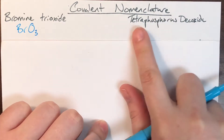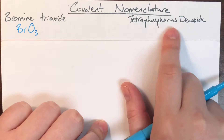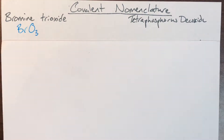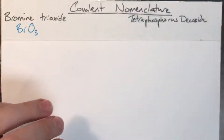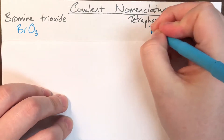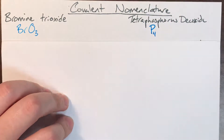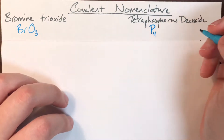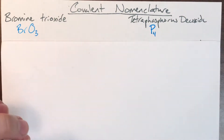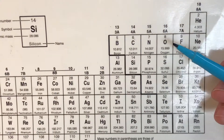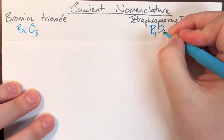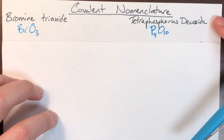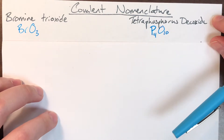Tetraphosphorus dekoxide. Tetra means 4, so we have 4 phosphoruses — phosphorus is P, giving us P4. Then dekoxide: deca is the prefix for 10, and oxide means oxygen, which is O. So we have 10 oxygens. Tetraphosphorus dekoxide is P4O10.